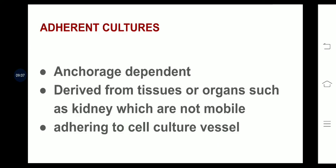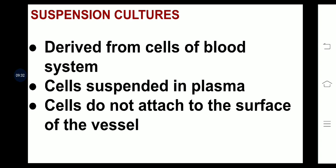Adherent cultures are anchorage-dependent. They are derived from tissues or organs such as kidney, which are not mobile, and they adhere to the cell culture vessel. In suspension cultures, cells are derived from the blood system, are suspended in plasma, and do not attach to the surface of the vessel — the opposite of adherent cells. Both adherent and suspension cultures are part of primary cultures.